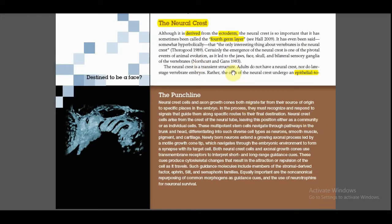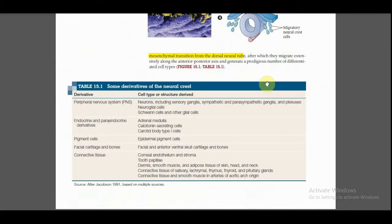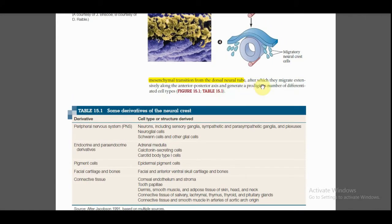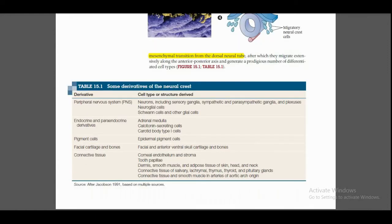Neural crest is a transient structure. That is why adults do not have a neural crest — late stage vertebrate embryos also do not retain a neural crest. Neural crest cells undergo a specific transition: epithelial to mesenchymal transition (EMT). This occurs from the dorsal neural tube. From the dorsal neural tube, this transition occurs and these cells will migrate.